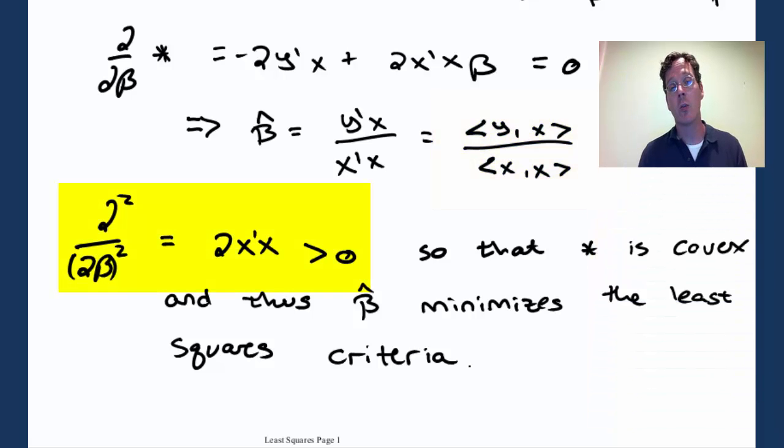We can check a second derivative condition easily because we get 2x transpose x when we take the second derivative, which is always strictly greater than 0 because this is just twice the squared norm of x. Therefore, our least squares criteria is convex and beta hat minimizes this criteria.